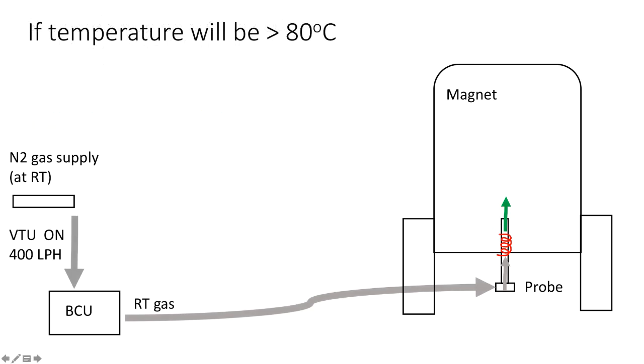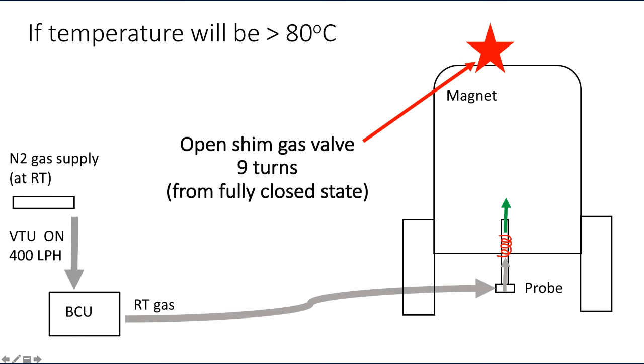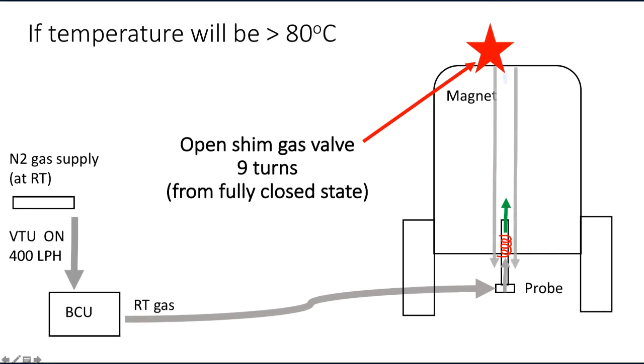If sample temperature is going to exceed 80 degrees C, we need to open shim gas valve 9 turns from fully closed state. This will supply a stream of nitrogen gas down the shim stack to cool the shim coils.